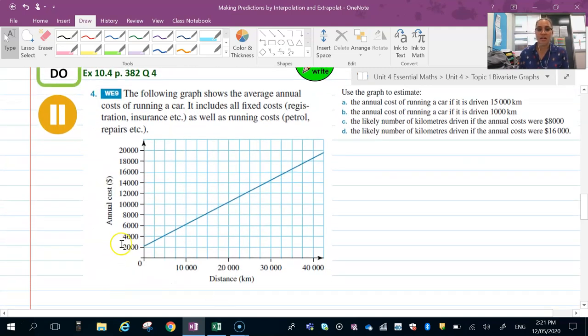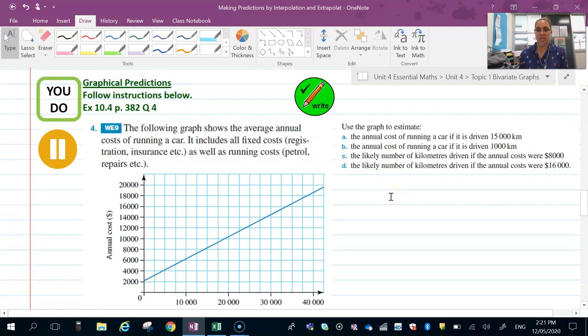Here we go. Here's a line of best fit showing the running costs. Use that to estimate your annual cost if you drove 1,500. Reading the appropriate scale measurement off your axes and then following these questions. Pause the video and have a go.